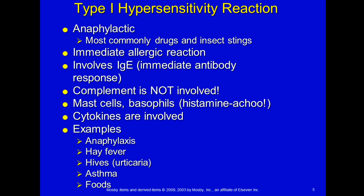We'll run through four different types of hypersensitivity reactions. You need to know the name, whether complement is involved, what types of cells are involved, and some examples. Type 1 hypersensitivity is anaphylactic. The most common is a drug-induced situation or an insect sting such as a bee sting. The response is fairly immediate and involves IgE.